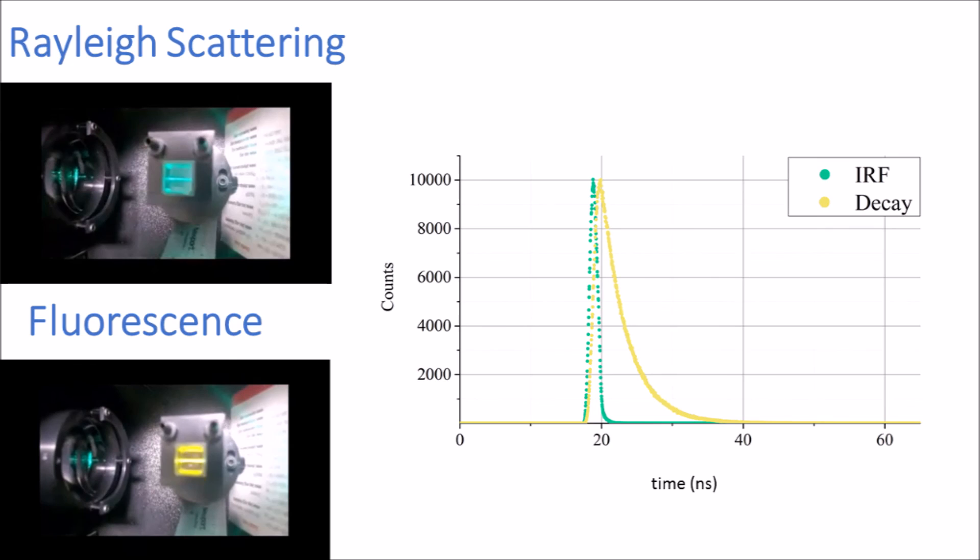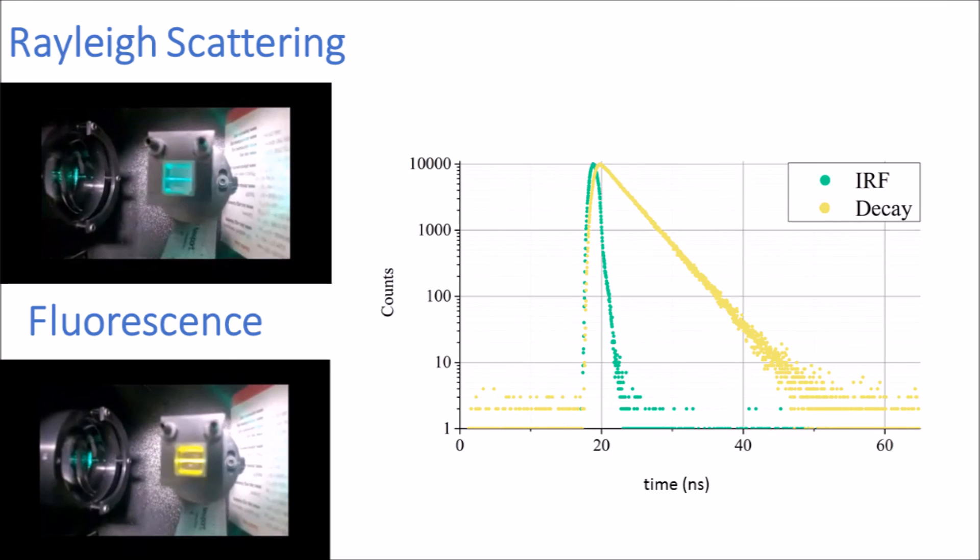The fluorescence decay is generally of an exponential form such as that shown. For convenience, it's often plotted in a log scale because the log of an exponential is a straight line, and we can fit this data to get the fluorescence lifetime. The lifetime is the time it takes for the intensity to fall 1 over E.